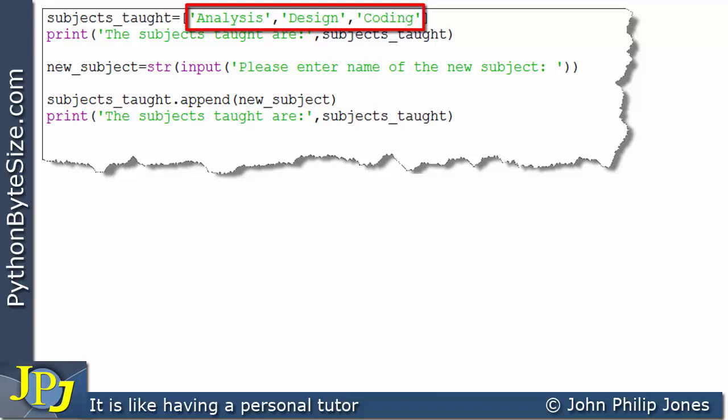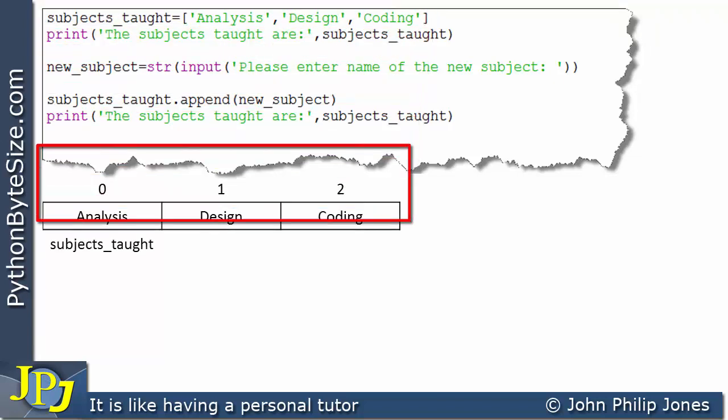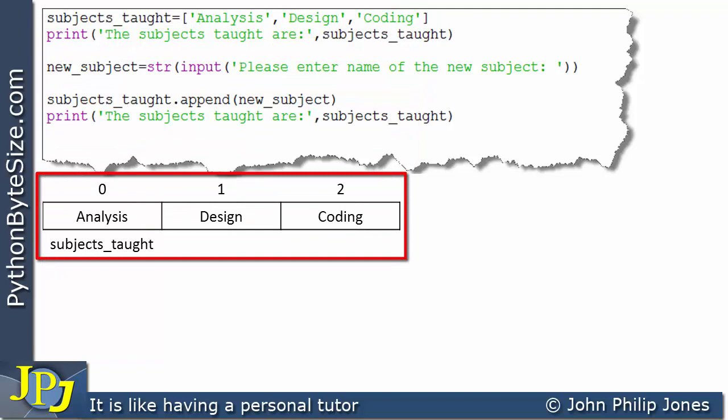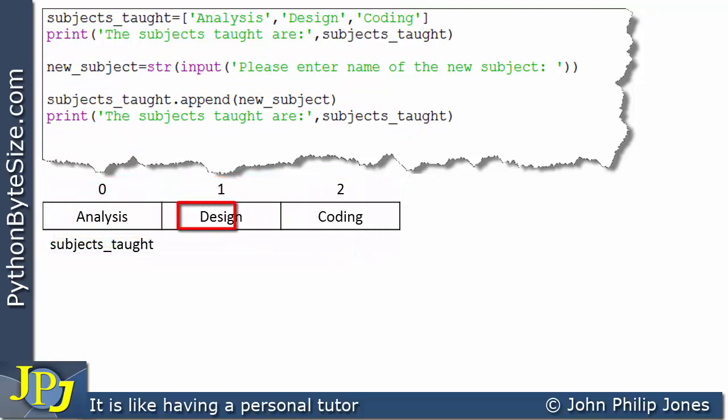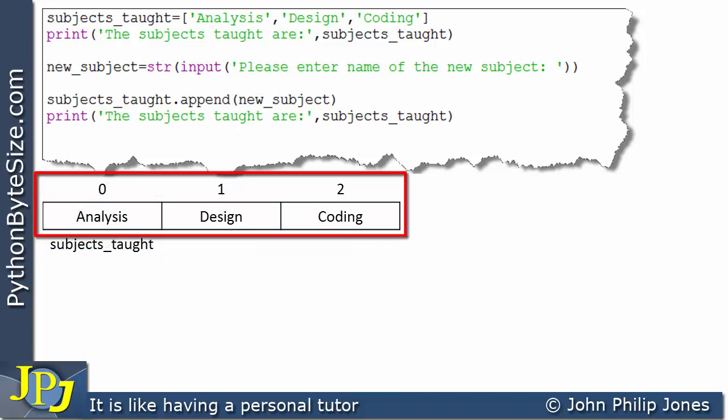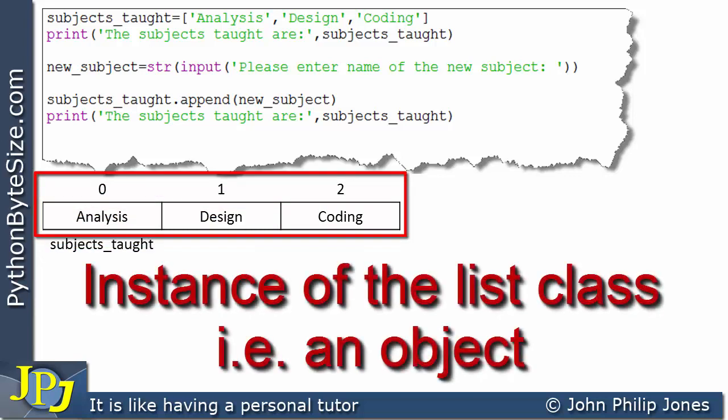And if we consider diagrammatically what this line will give us, it'll give us this here. And you can see we have a schematic representation of a list that contains analysis, design, and coding. And we can see here that the index goes from 0 through to 2. And that the name of the list is subjects_taught. And what we're really saying here is that this is an instance of the list class, i.e. an object.